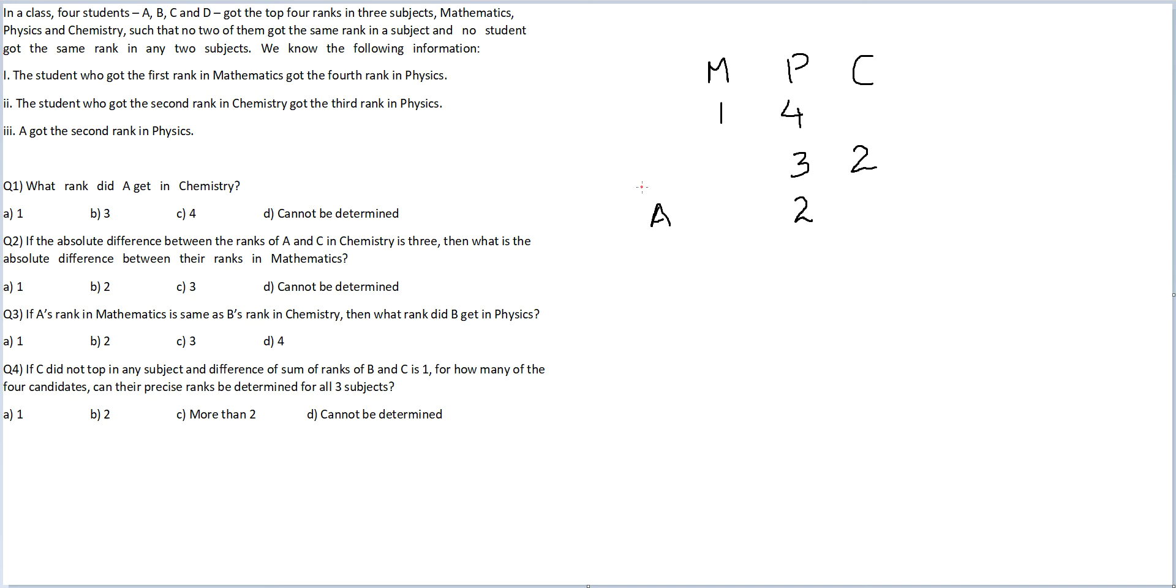Now, I don't know who comes here above A in this line. We don't know who comes. But this person will either get one rank or four rank here because one is already available to somebody else in Mathematics. This person will now be four. Wonderful.